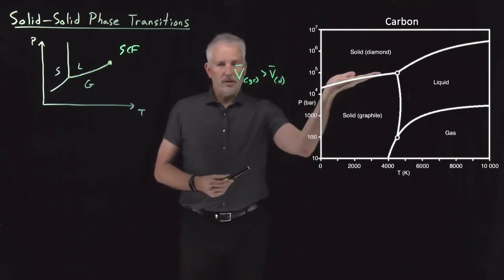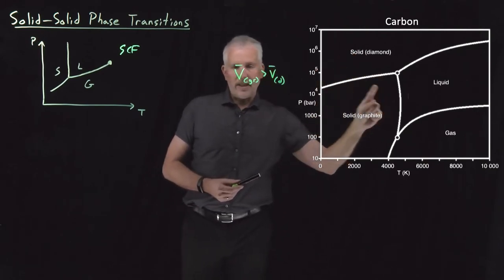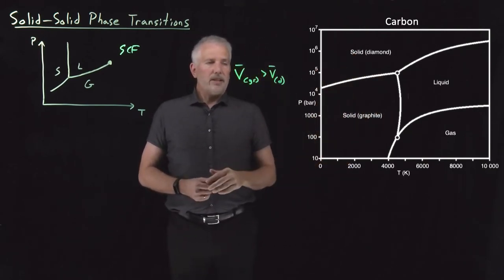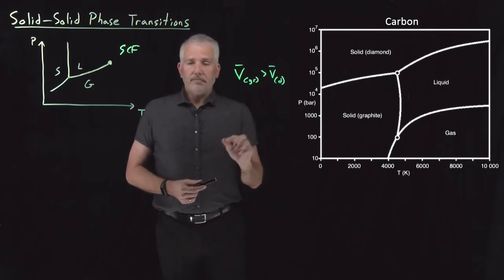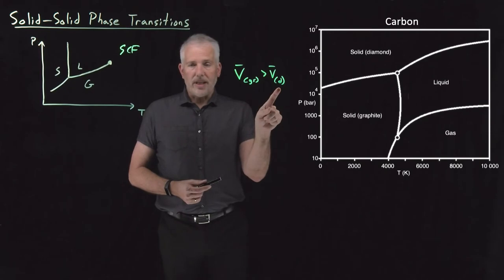If this line were sloping in the opposite direction, the slope like that, the opposite would be true. That tells us that diamond is more dense than graphite. The molar volume of graphite is bigger than that of diamond.